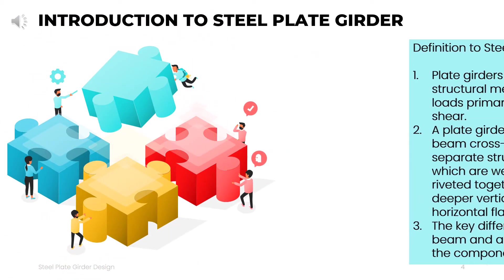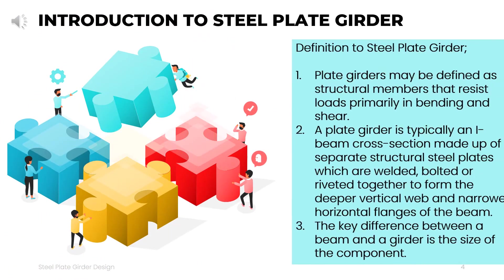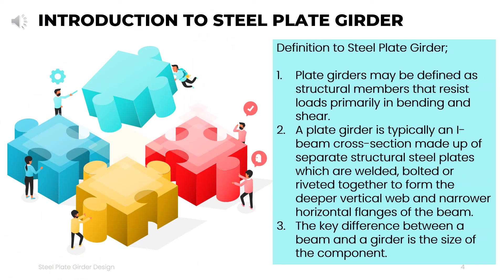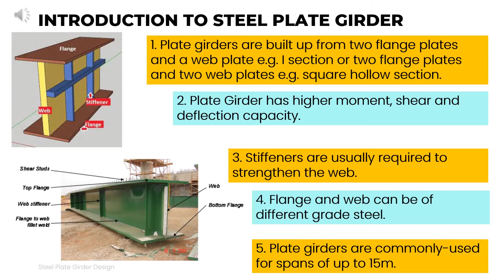Plate girders may be defined as structural members that resist loads primarily in bending and shear. A plate girder is used when we need deeper sections having higher stiffness to carry heavy loads. The key difference between a beam and a girder is the size of the component. Plate girders are built up from two flange plates and a web plate.